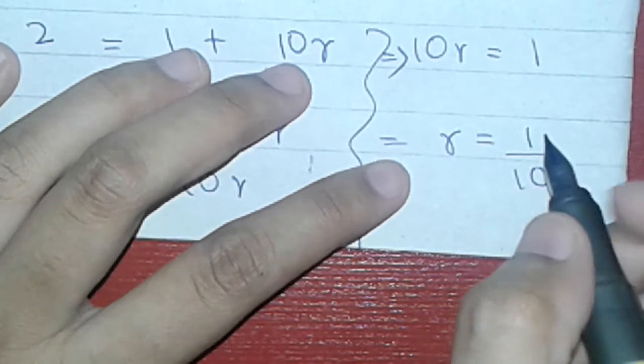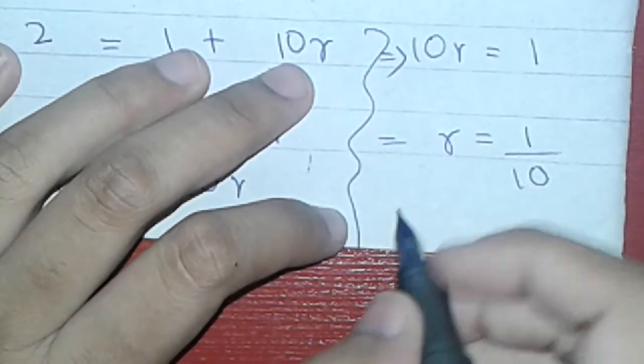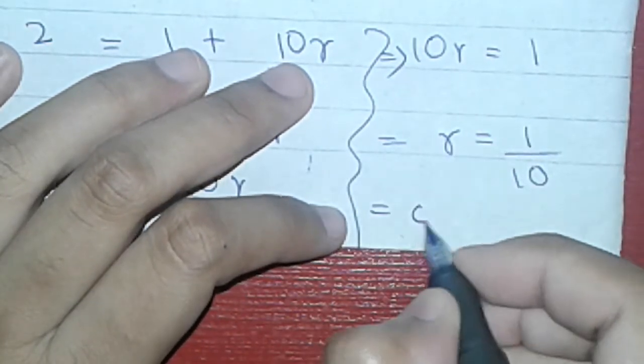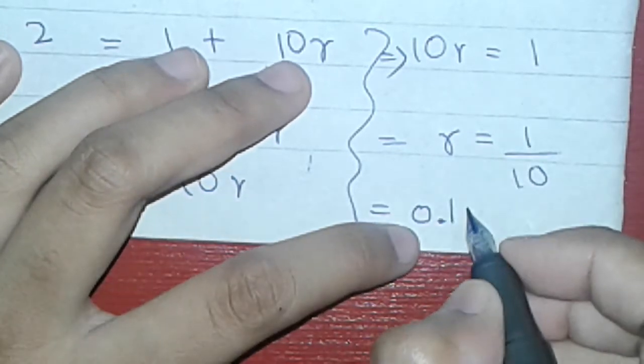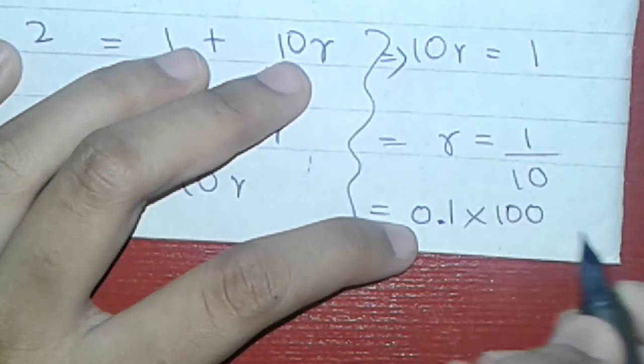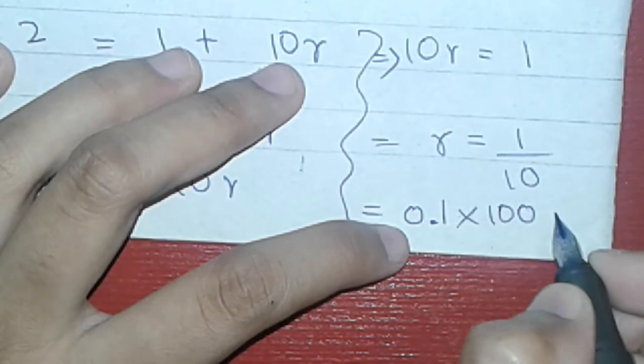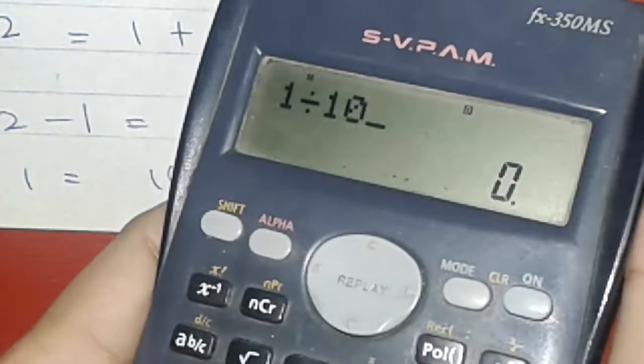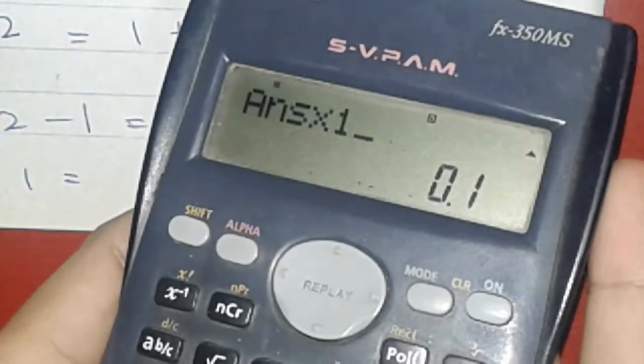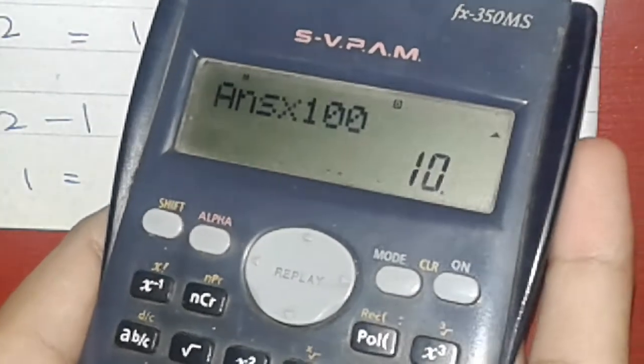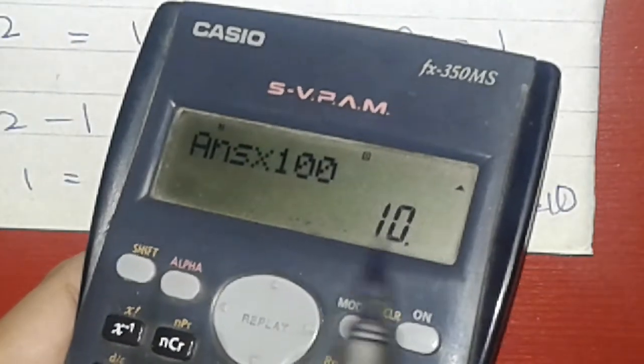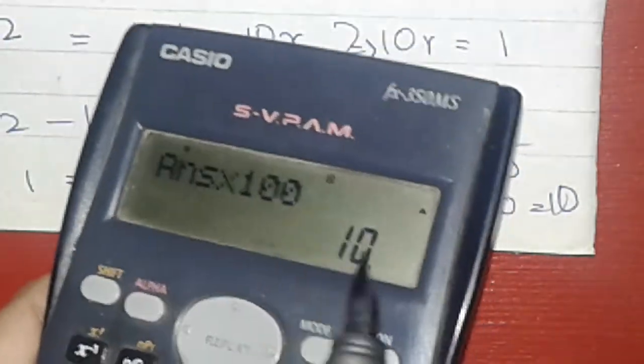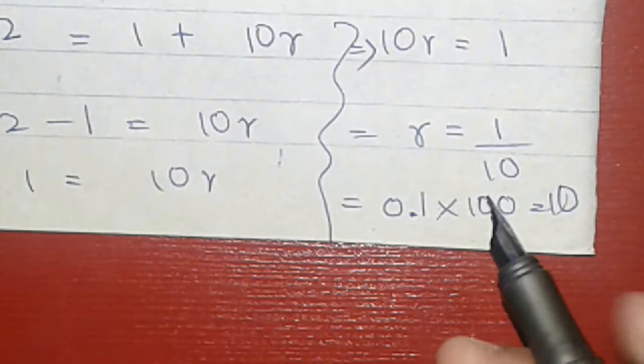1 upon 10, we will divide it by 10. So this answer will be 0.1. And we will multiply it by 100, so this answer will be 10.